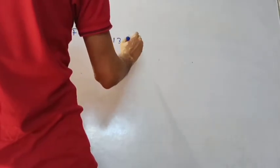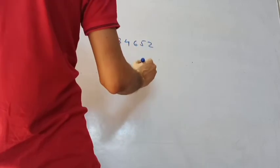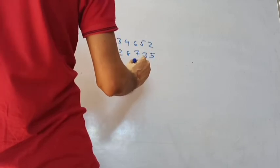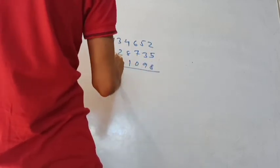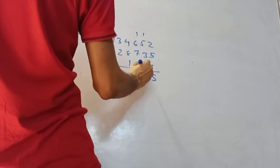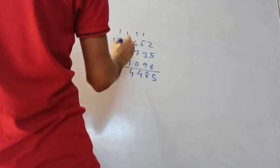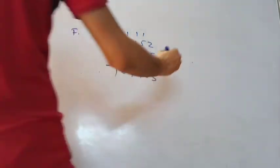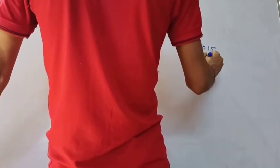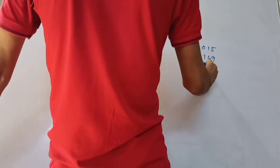Next we have addition and subtraction. Addition problem number 1: adding 134,652 + 287,351 + 98,257. Working column by column with carrying: ones — 2+1+7=10, write 0 carry 1; tens — 5+5+5+1=16, carry 1; hundreds — 6+3+2+1=12, carry 1; and so on. The result of addition problem 1 is obtained step by step with carrying.